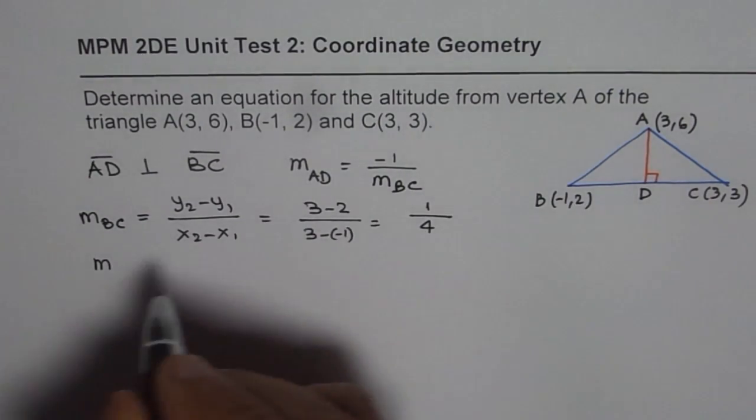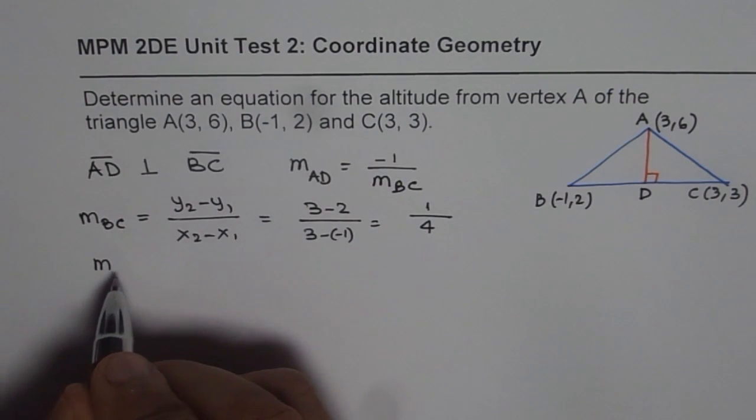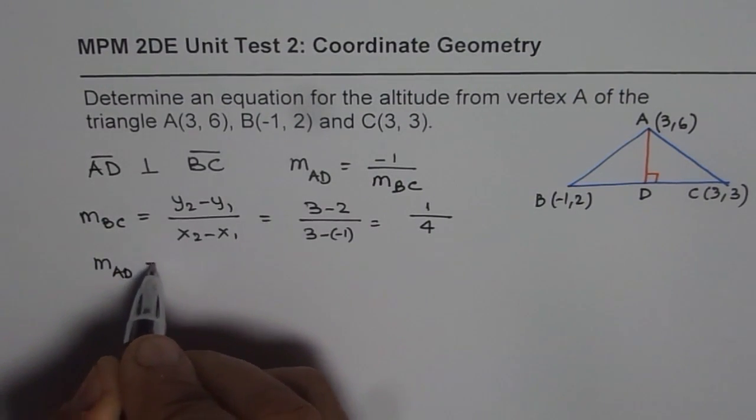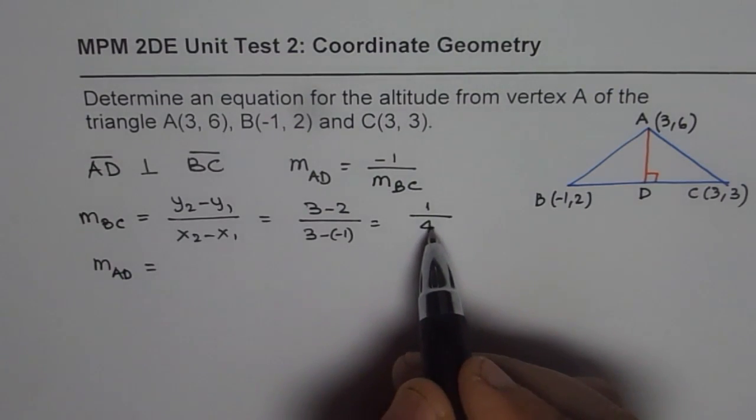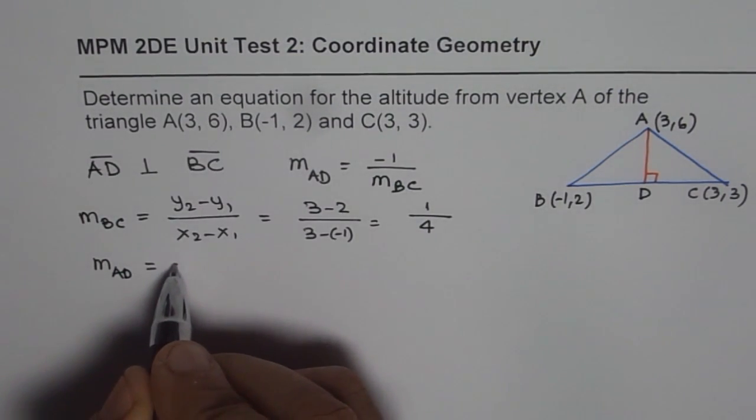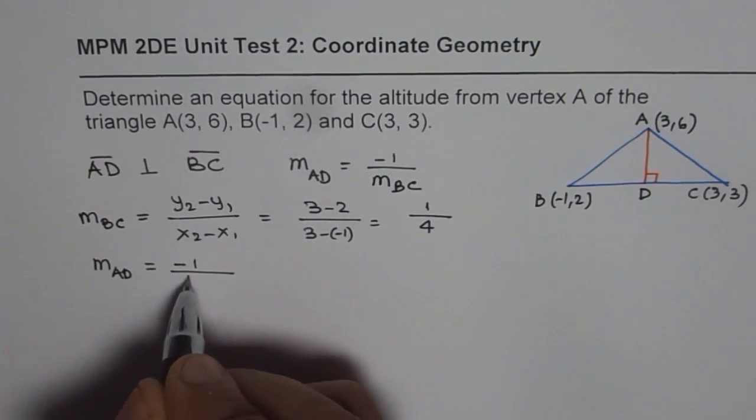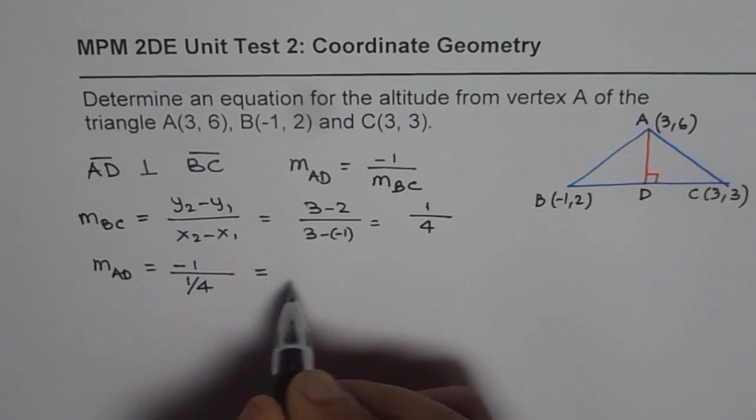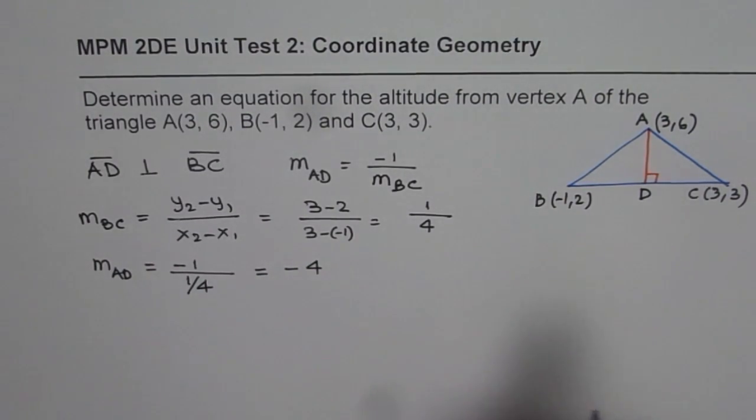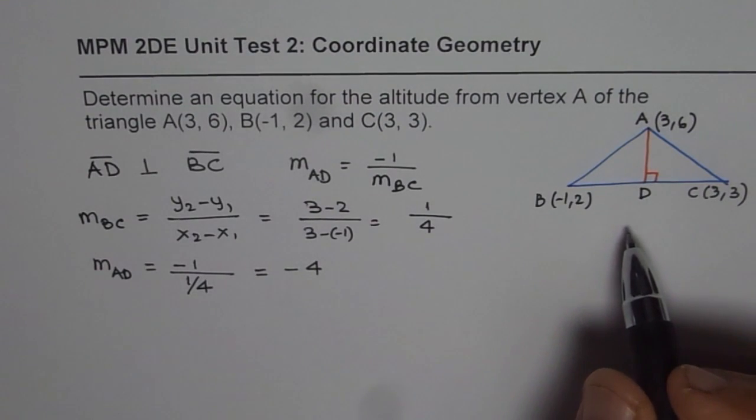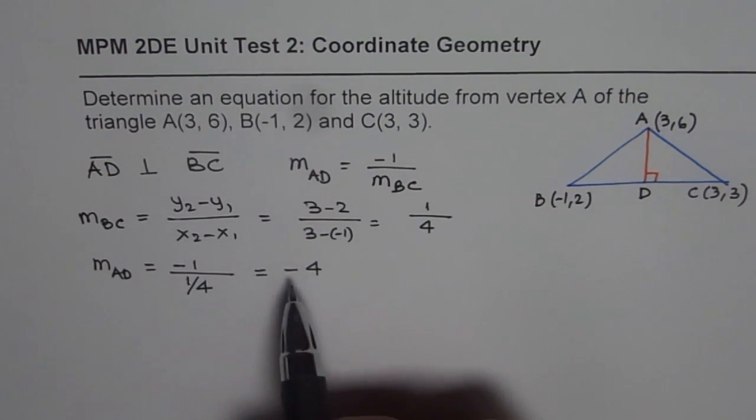So what is the slope of the perpendicular? The altitude slope AD will be equal to negative reciprocal of this. That means negative of 1 over 1/4, which makes it -4. So the slope for us is -4 for AD.